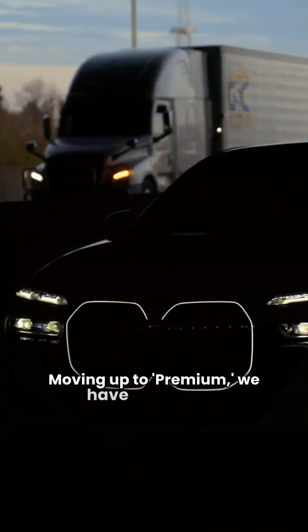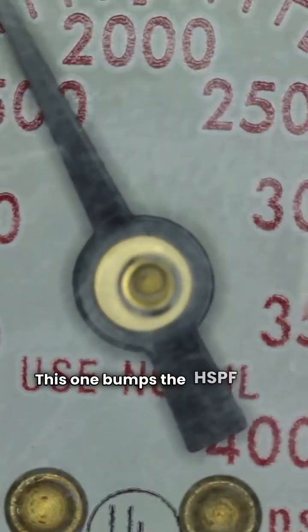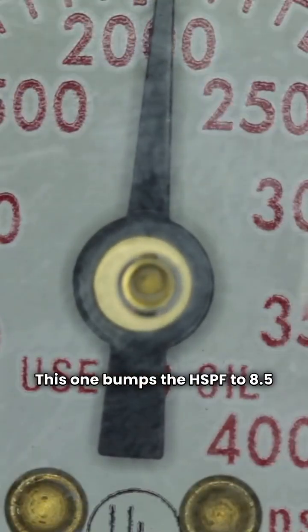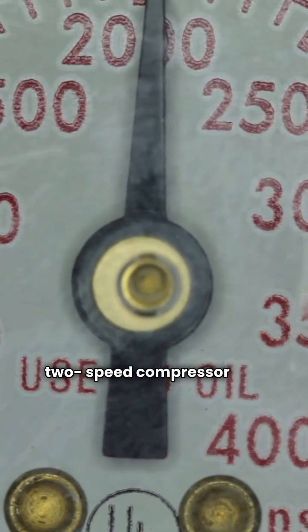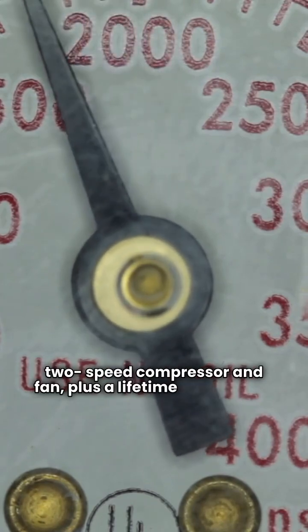Moving up to premium, we have the GSZ-C7. This one bumps the HSPF to 8.5 and adds a two-speed compressor and fan, plus a lifetime compressor warranty.